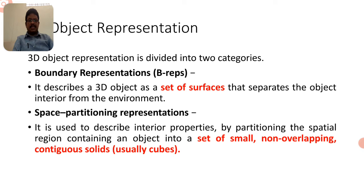Space partitioning representation is a set of small, non-overlapping contiguous solids — usually cubes. When using that cube format, that is the space partitioning representation. It describes interior properties by partitioning the spatial region containing an object into smaller, non-overlapping cubes.